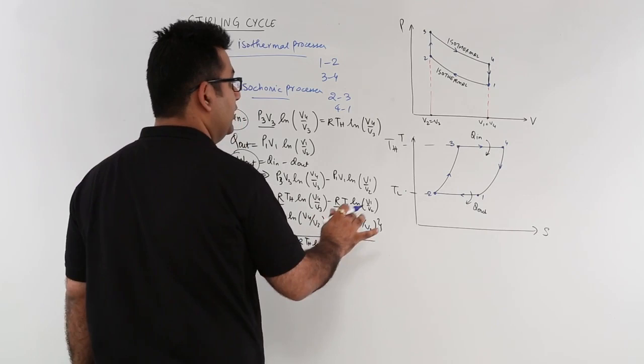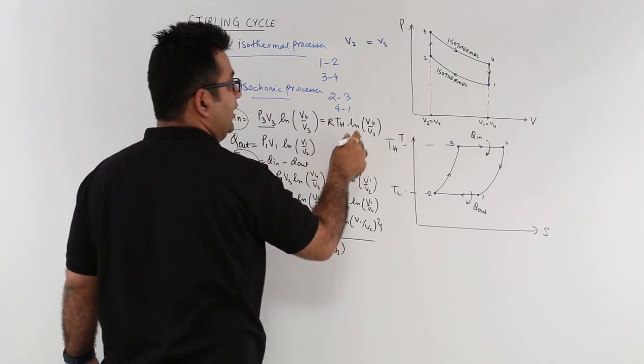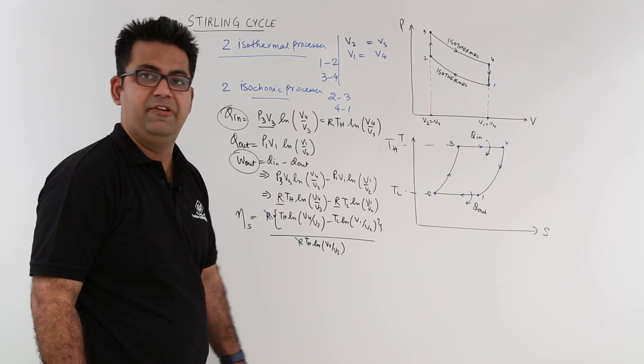Now, let us have a look at these ratios. So you have V2 is equal to V3, and then you have V1 is equal to V4.